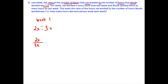By putting this variable x in place, this allows us to later solve for x, which will tell us the number of hours they both worked. In week two, Joe worked four more hours than last week. So if Joe worked 2x hours, then this week Joe worked 2x plus 4 hours.